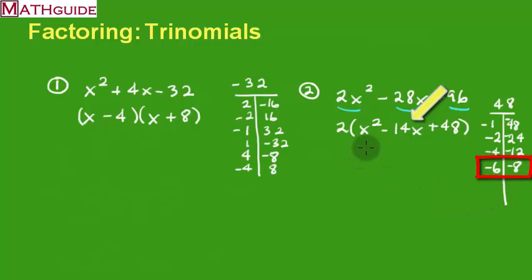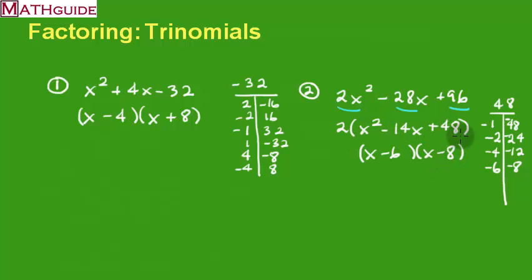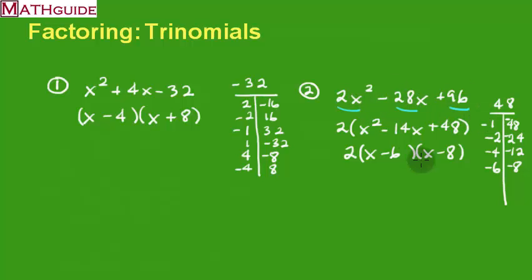Those are the two factors. I factor the trinomial as (x minus 6)(x minus 8), and I bring down the 2 from the common factor I pulled out earlier. So the complete factored form is 2 times (x minus 6) times (x minus 8) — three factors that when multiplied give back the original trinomial.